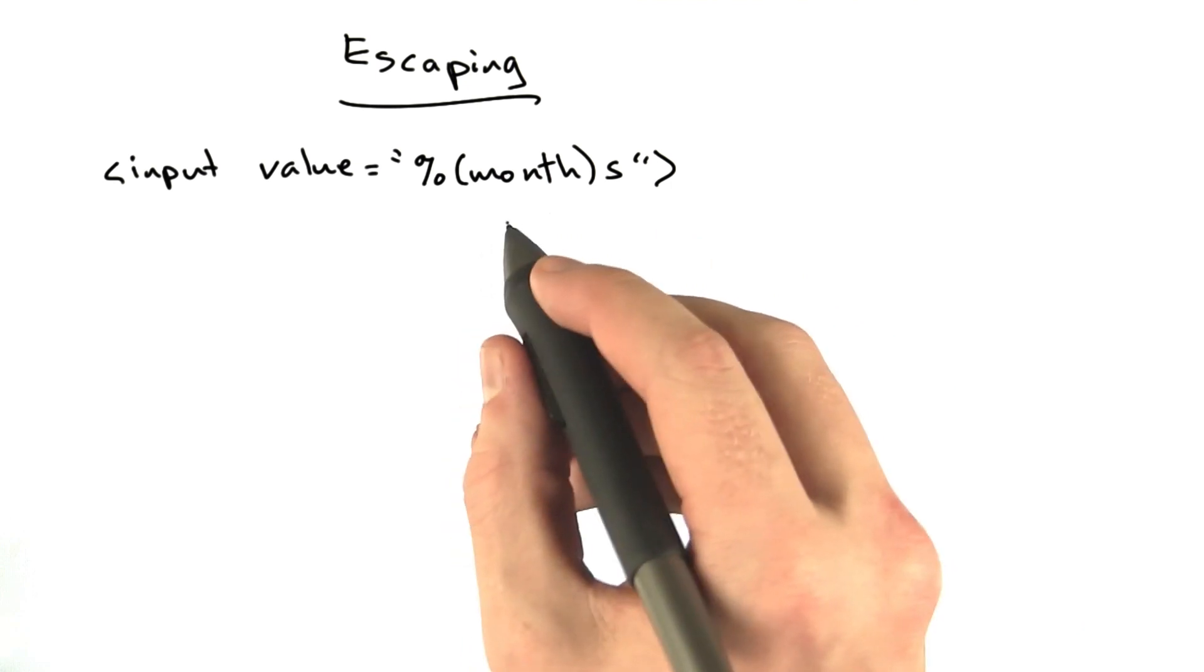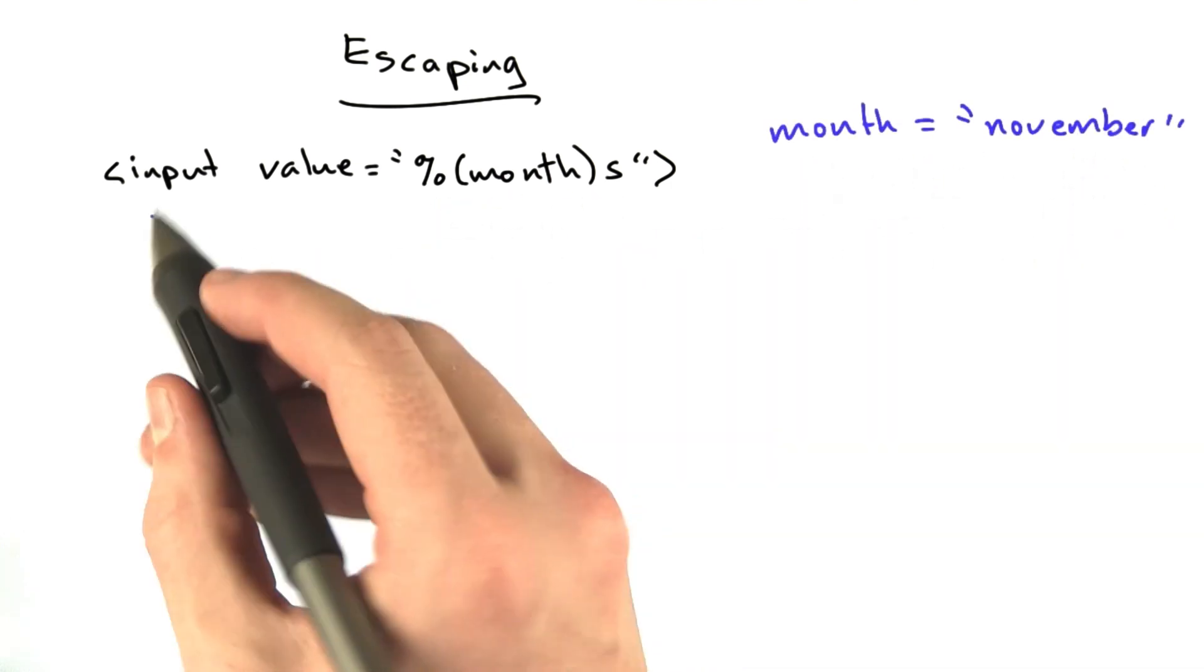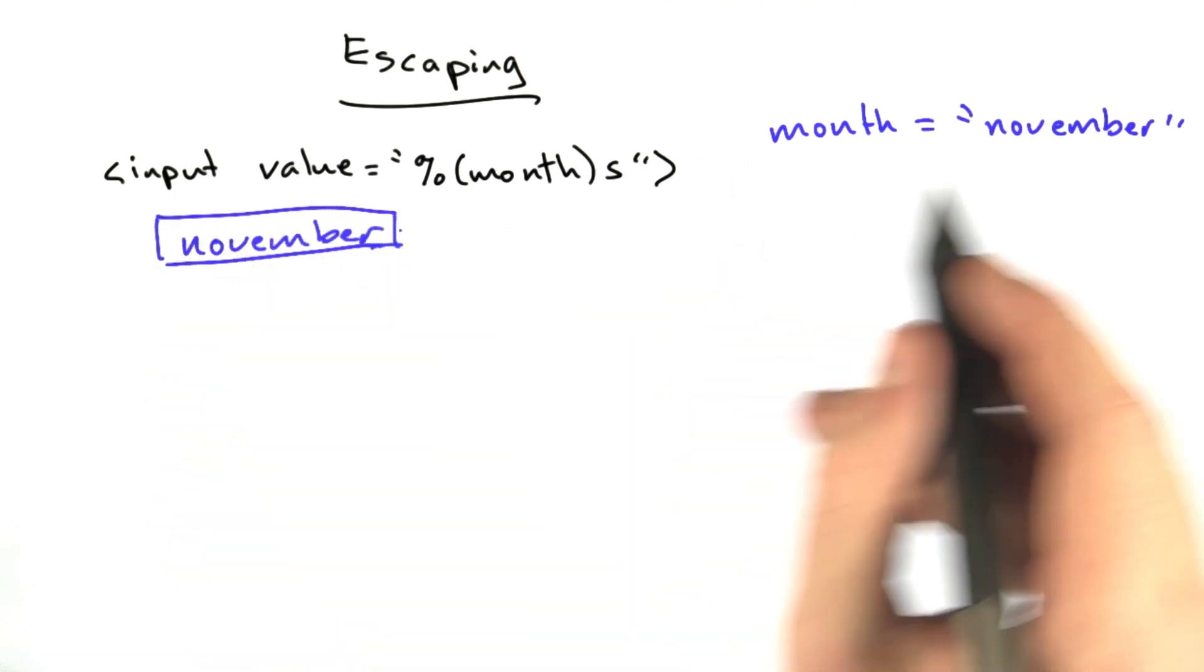Our variable month gets substituted into the string. So if month equals November, the string November renders. And we get a text box that looks like this, which is what we'd expect.